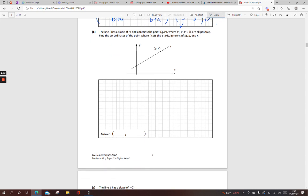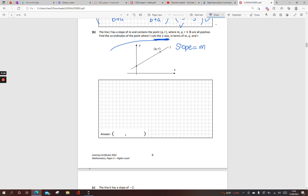Next one. The line L has slope M. So, the slope is equal to M. Contains the point QR, and they're all positive. Find the coordinates of the point where it cuts the Y axis. Now, once I see cuts the Y axis, I'm thinking cuts the Y axis when X is equal to 0. So, my X coordinate is going to be 0. So, down here when I'm writing XY, my X is going to be 0. Find it in terms of M, Q, and R. So, I'm not going to work out the value of M, Q, or R. I'm just going to have an expression with M, Q, and R in it.